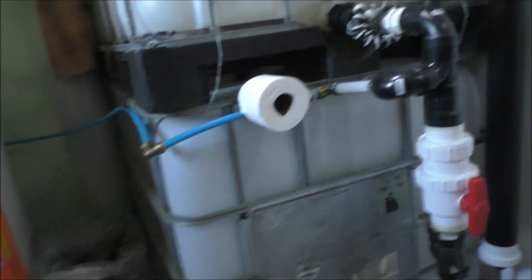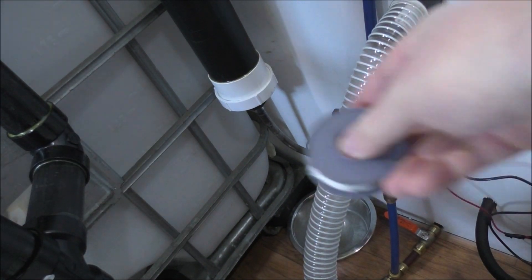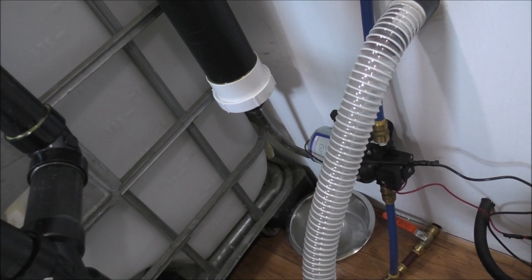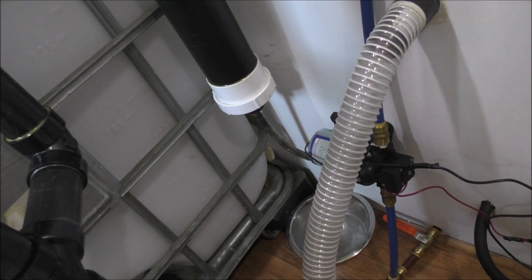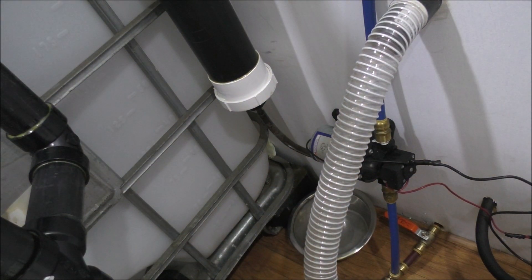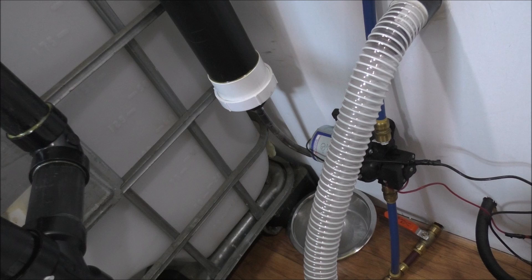Today we get to Teflon tape the first flush rain catchment system because it is leaking. Probably because it froze at the beginning of winter and was not a good idea to do that.